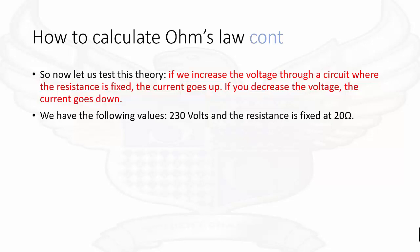We shall test our theory now. If we increase the voltage through a circuit where the resistance is fixed, the current goes up. If you decrease the voltage, the current goes down. We have the following values: 230 volts and the resistance is fixed at 20 ohms.